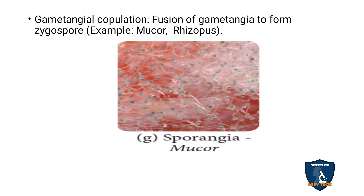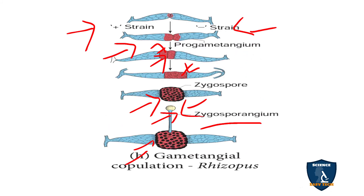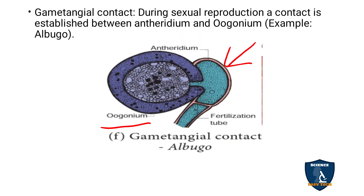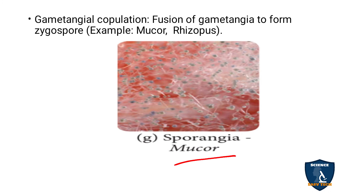Gametangial copulation, as explained with Rhizopus, involves fusion of gametes to form a zygospore. This is also seen in Mucor.